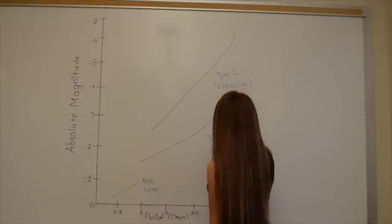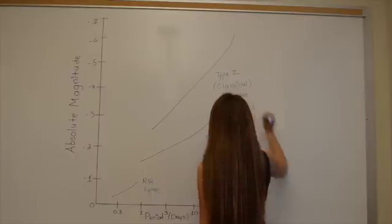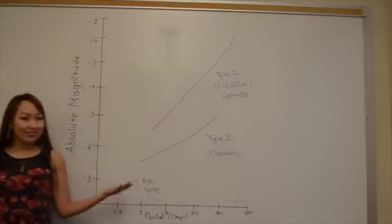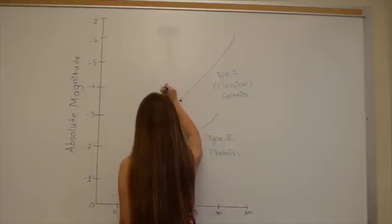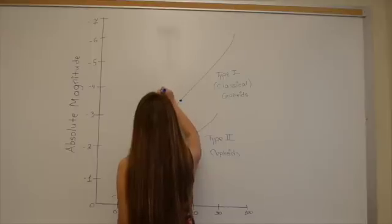In this graph, I plotted the RR Lyrae variable star, the Type 2 Cepheid variable stars, and also the Type 1 Cepheid variable stars, also known as the classical Cepheid variables. In this graph I also plotted the Cepheid star.